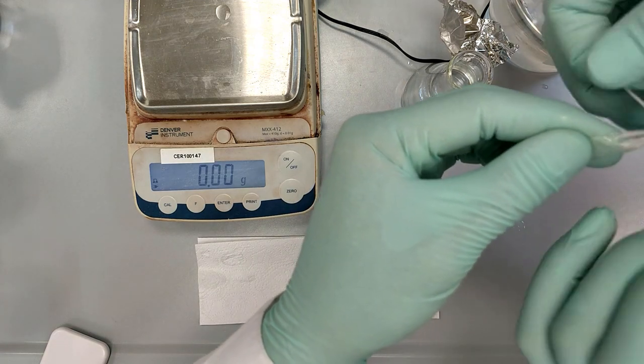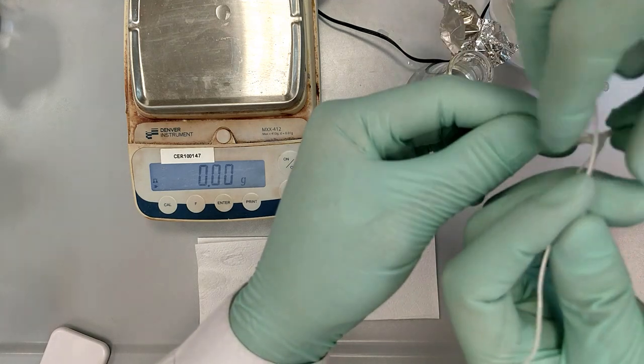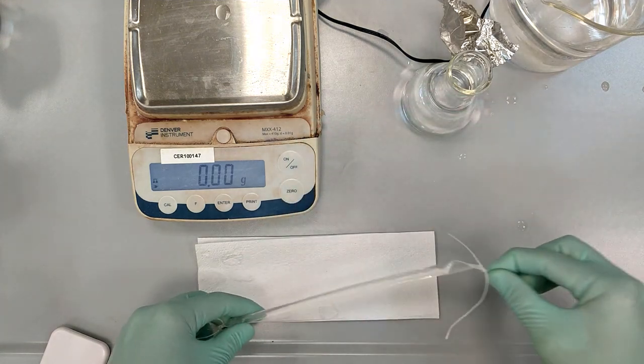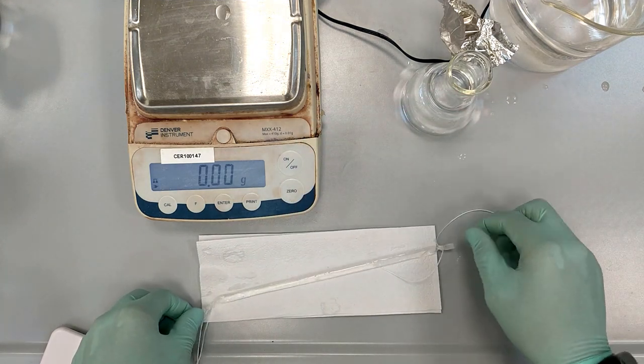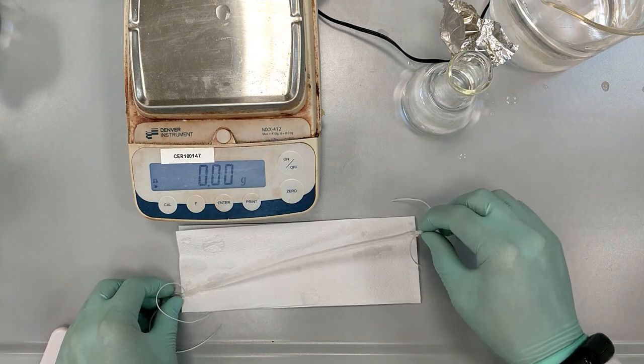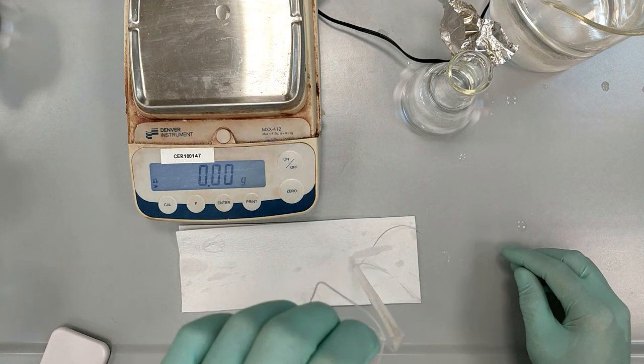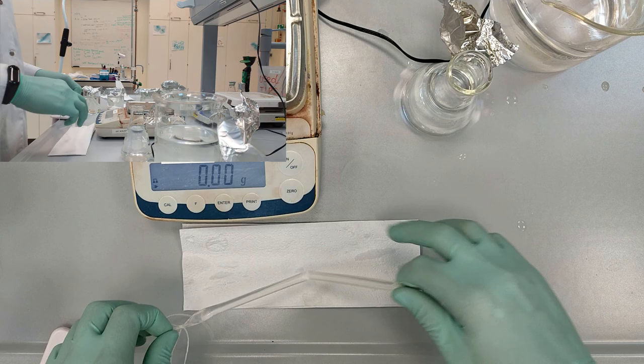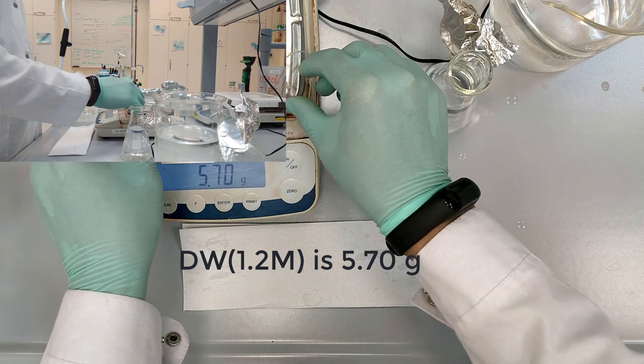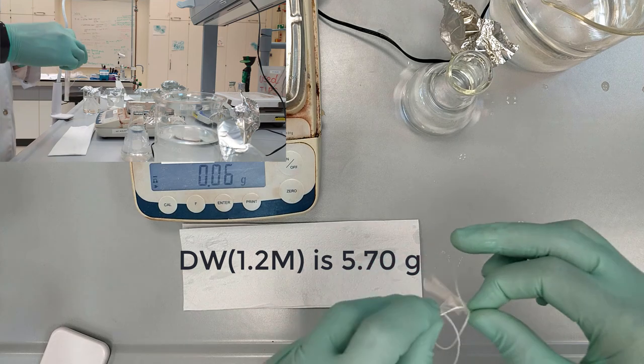You might have noticed that the volumes of our solutions of glucose changed from the previous videos. This is because we wanted to make sure that the conditions for all of the tubes are the same. So we prepared more solutions so that we have 200 ml in each of the beakers. So the last tube weighs 5.70 grams and we put it inside the beaker with the highest concentration of glucose.